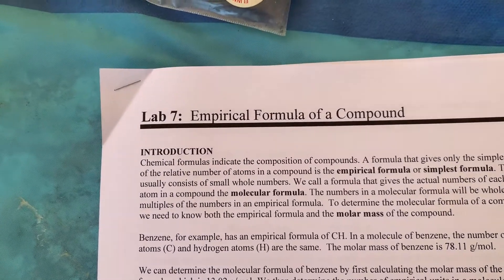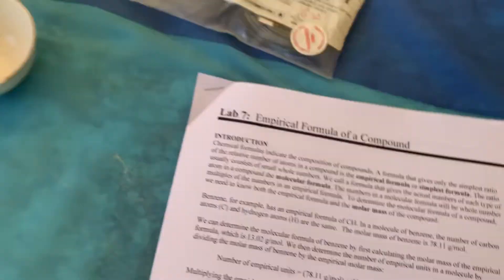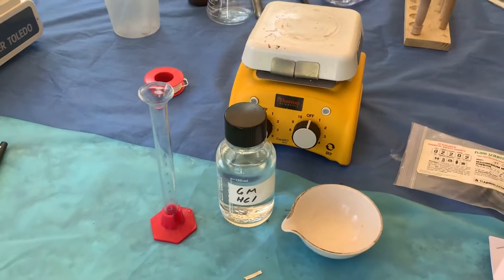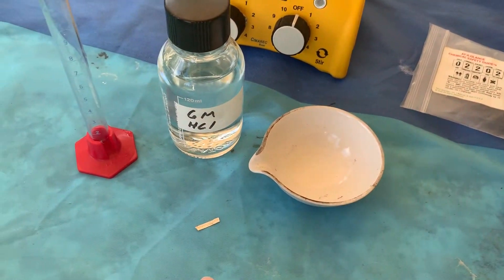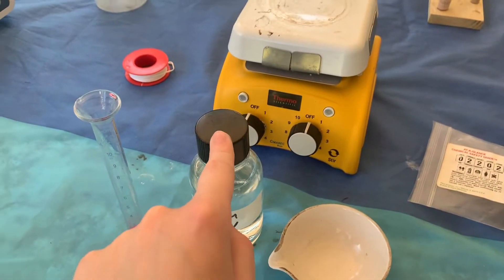Hi everyone, welcome to Lab 7 empirical formula of a compound. So here's the stuff we have, or the materials. We have an evaporating dish, magnesium ribbon, six molar HCl, a 10 ml graduated cylinder, and a hot plate.